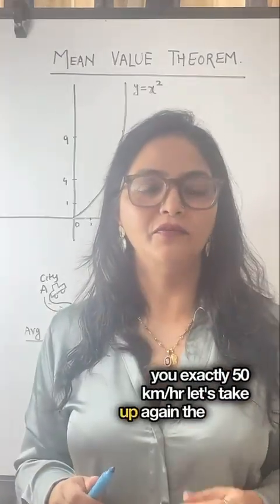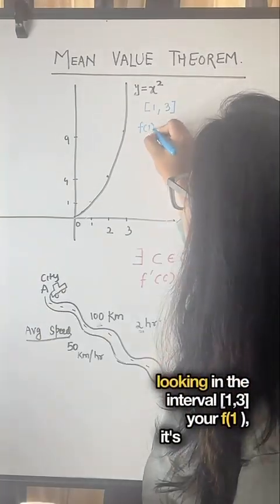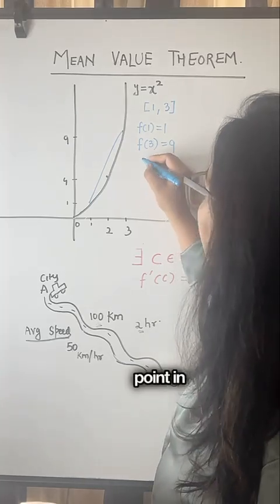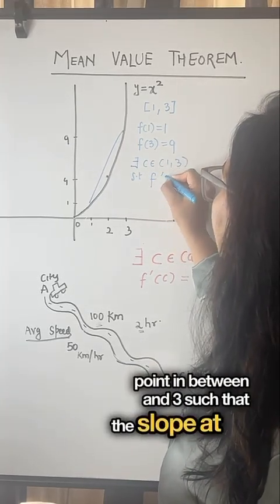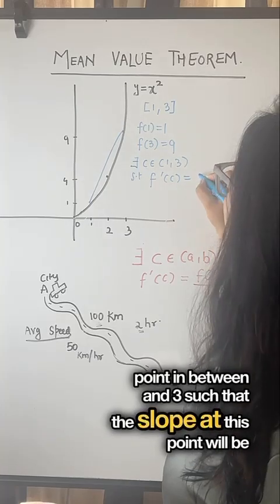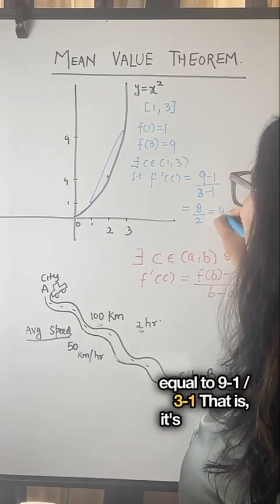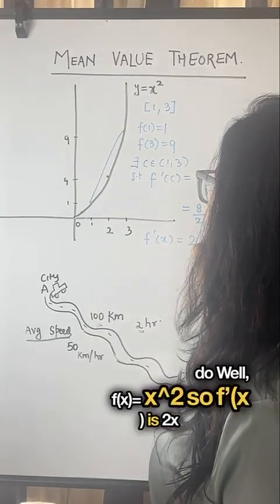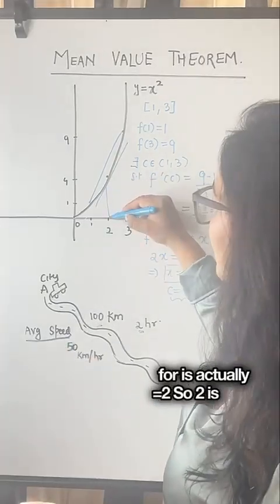Let's take up again the graph of y = x². We are looking in the interval [1, 3]. Your f(1) is going to be 1, f(3) is going to be 9. There would be at least one point in between 1 and 3 such that the slope at this point will be equal to (9 - 1)/(3 - 1), that is, it's going to be equal to 4. f(x) is x², so f'(x) is 2x. The c that you are looking for is actually equal to 2.